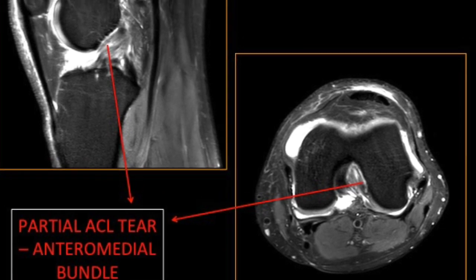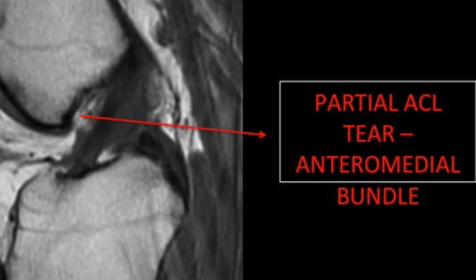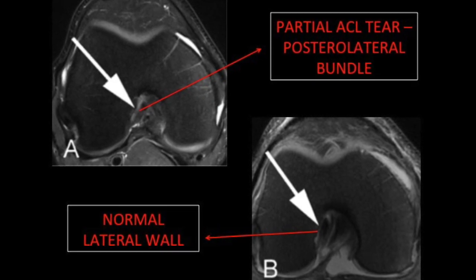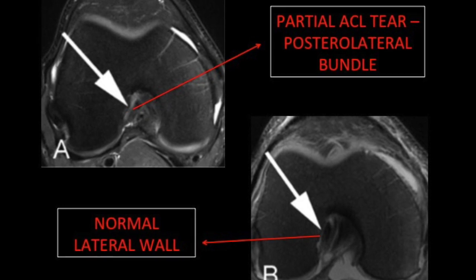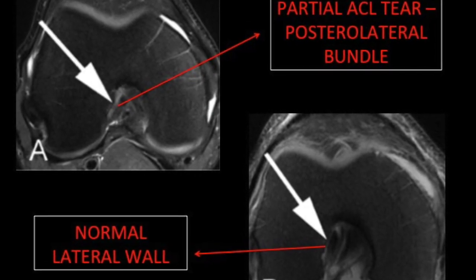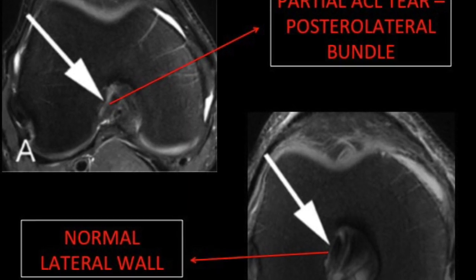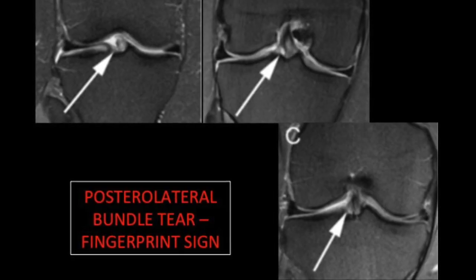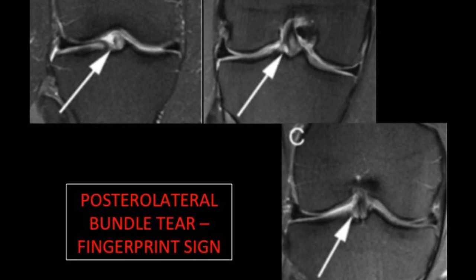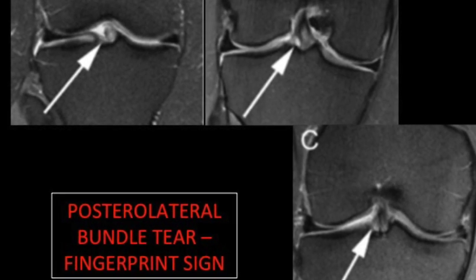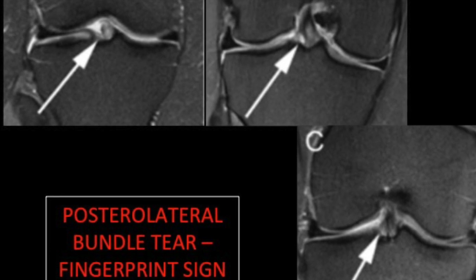Partial tears are usually seen as partial tear of the anteromedial bundle, as in this case. Posterolateral bundle tears, on the other hand, have to be assessed in all imaging planes. In a posterolateral bundle tear, we see a gap between the dark signal intensity of the ACL and the lateral femoral condyle — this is called the gap sign. Normally there should be no gap and the ACL is supposed to completely hug the lateral femoral condyle. Another sign is the fingerprint sign, where normally the tibial attachment spans the entire interspinous region, but a gap in the lateral aspect indicates a posterolateral bundle tear.